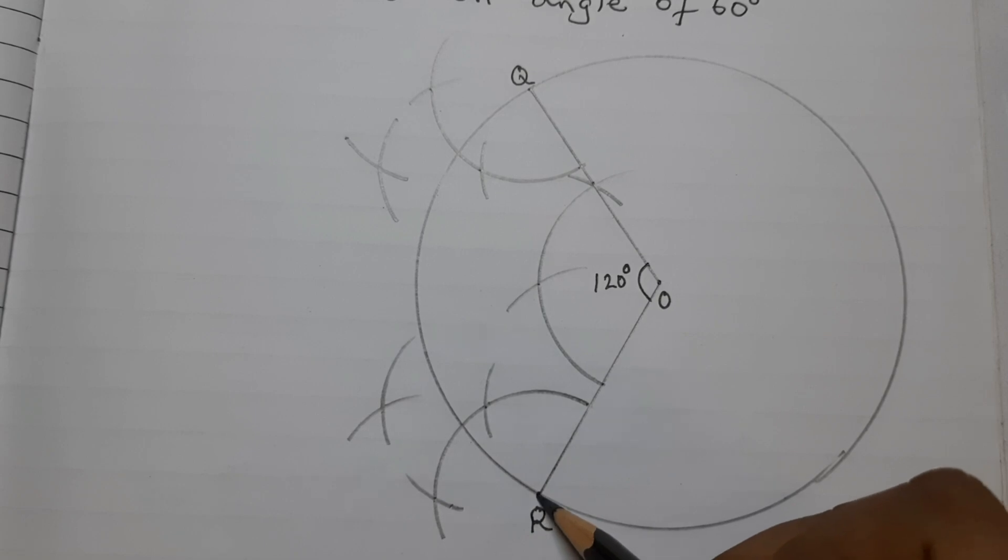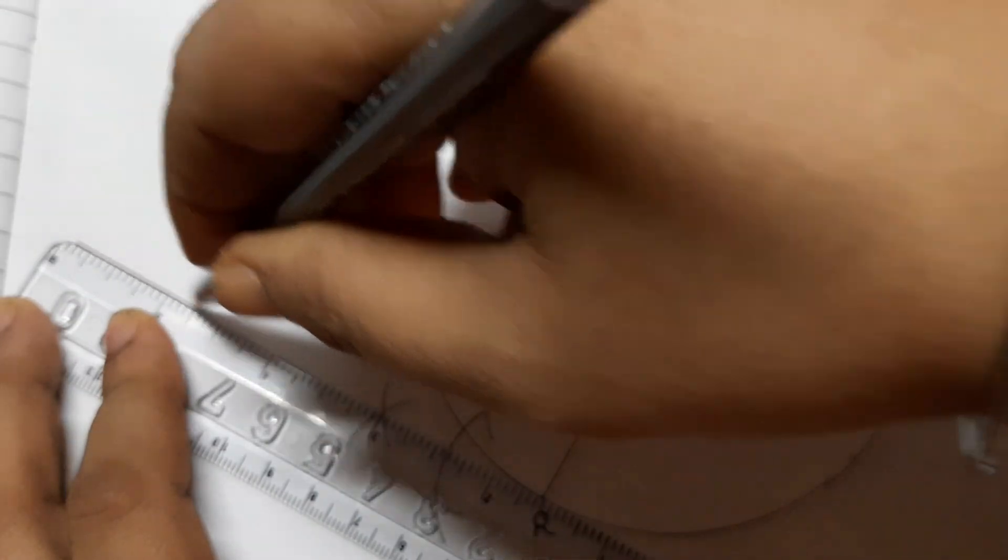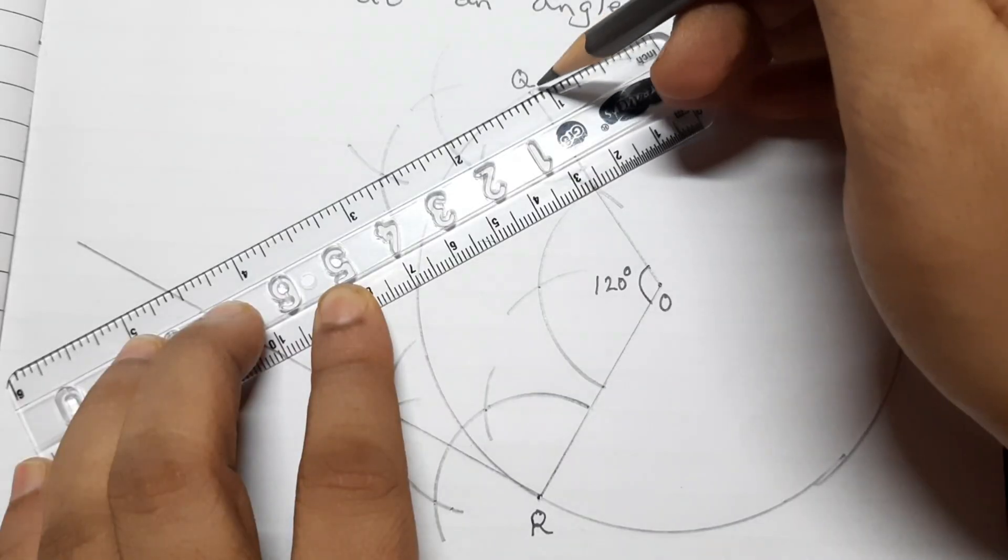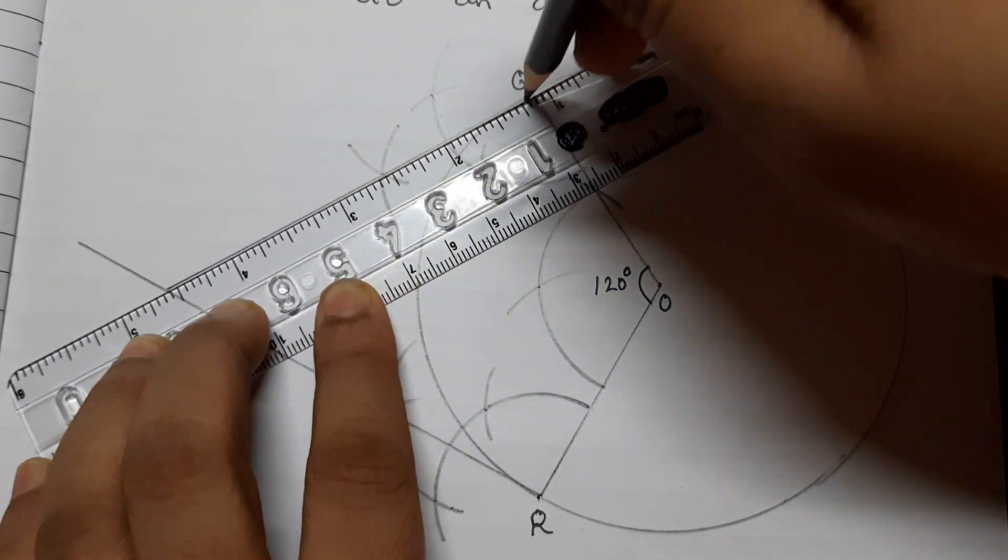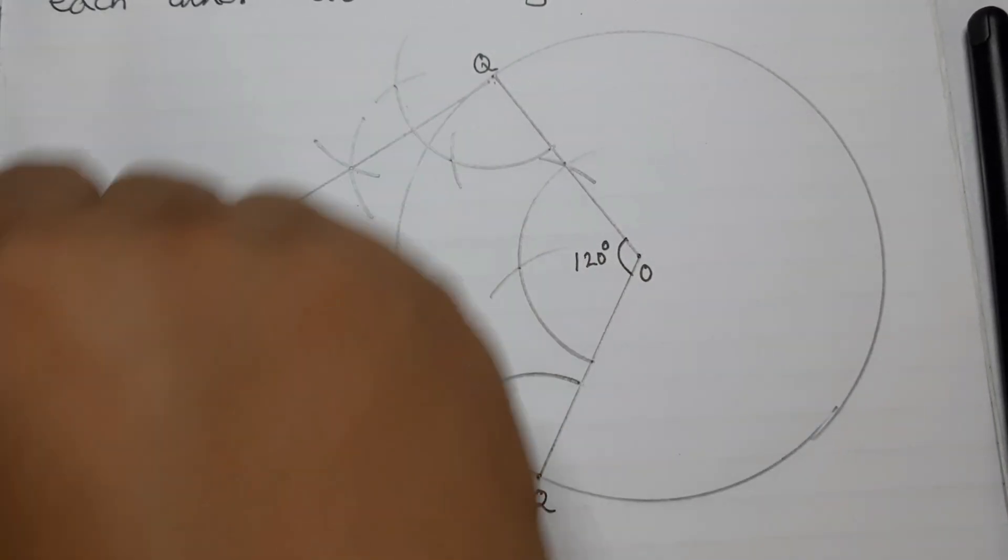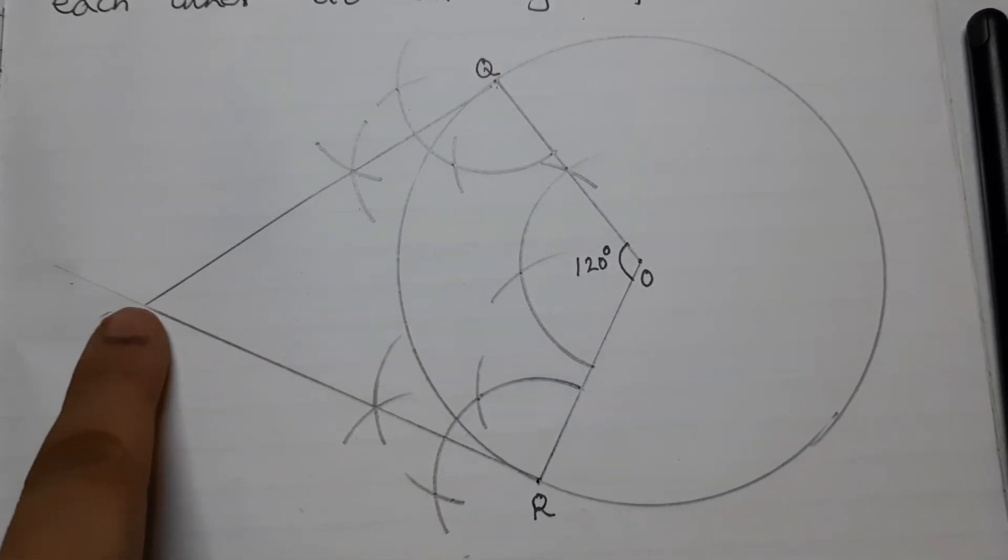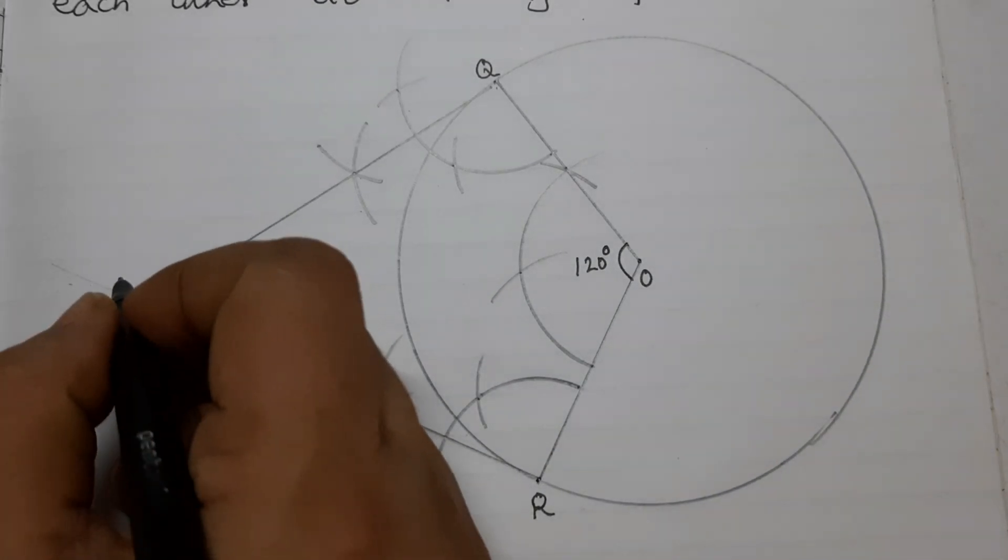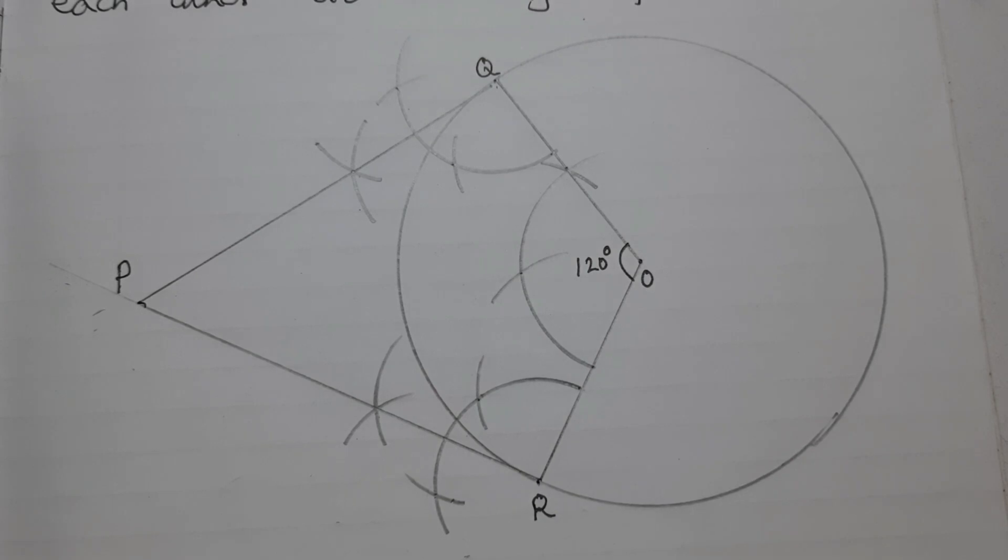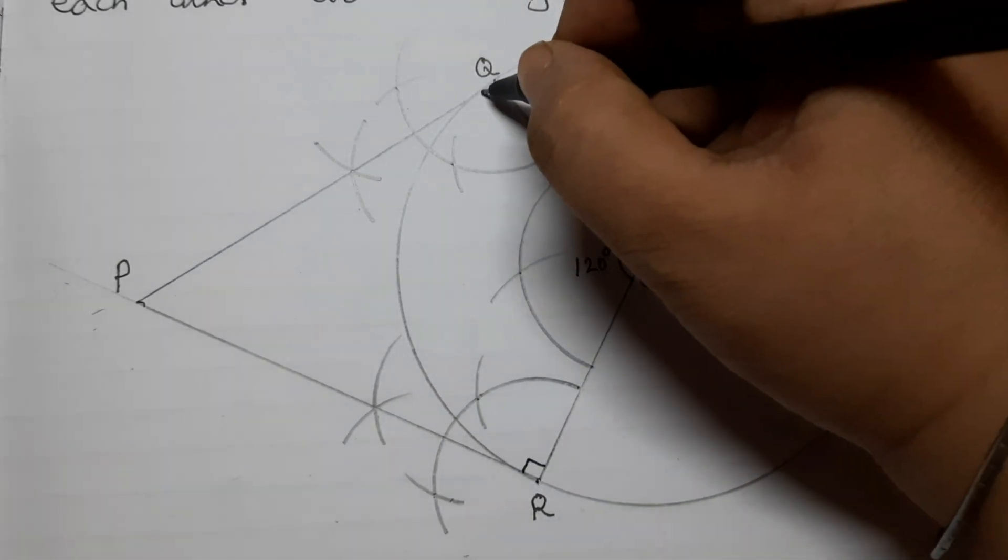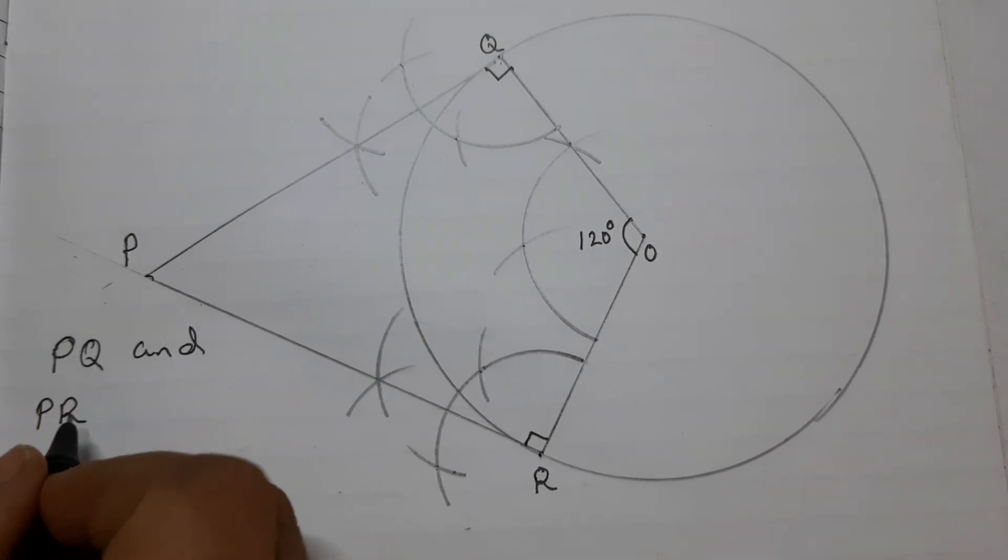Now join R and this intersection point and Q and this intersection point. Both the perpendiculars intersect at a point and mark it as P. This point here is P. And this is 90 degrees. This is also 90 degrees.